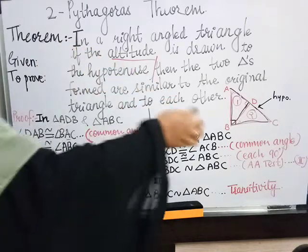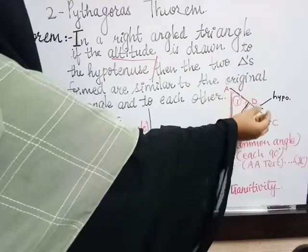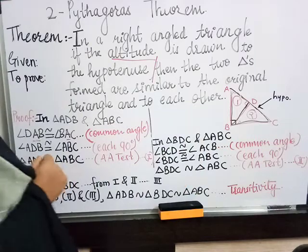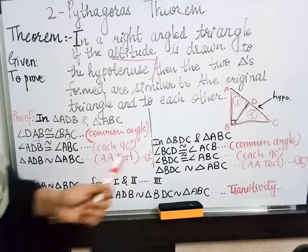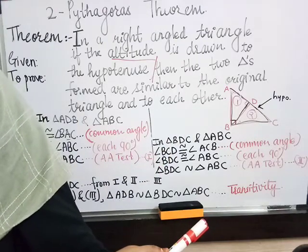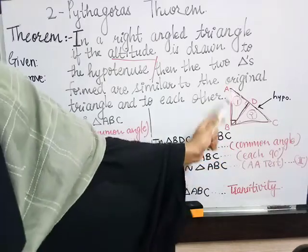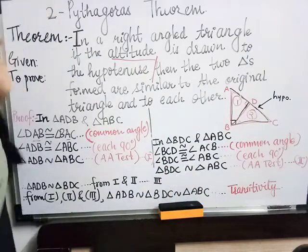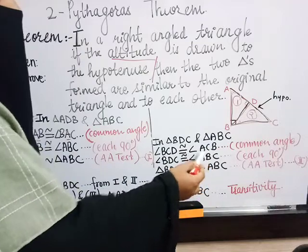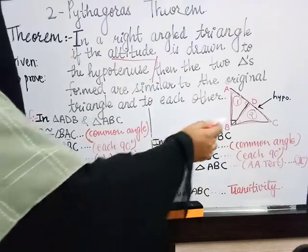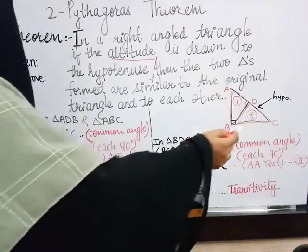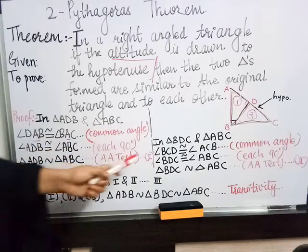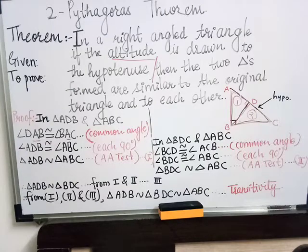Next, take triangle BDC — the other triangle formed — along with the original triangle ABC. We use the same property: angle BCD is congruent to angle ACB, since C is the common angle. Next, angle BDC is congruent to angle ABC, because both are 90 degrees. So by the angle-angle test, both triangles are similar. This is equation two.